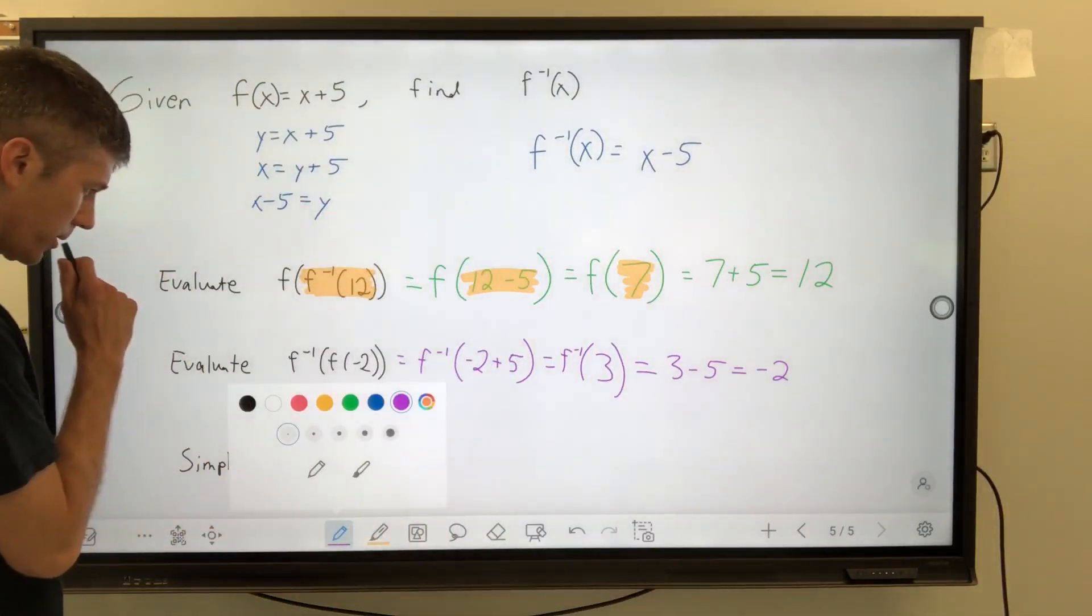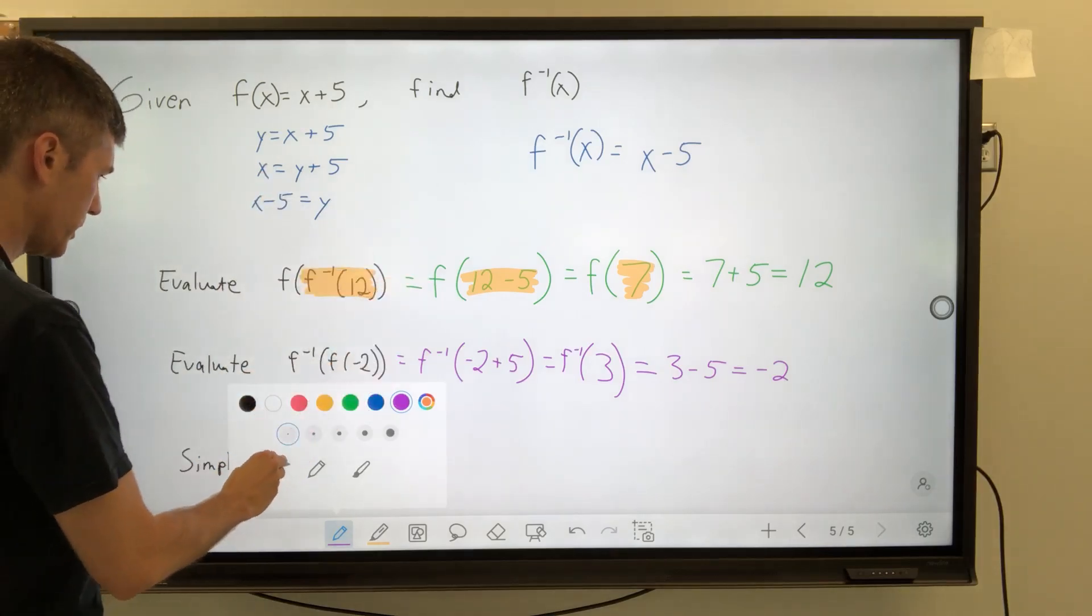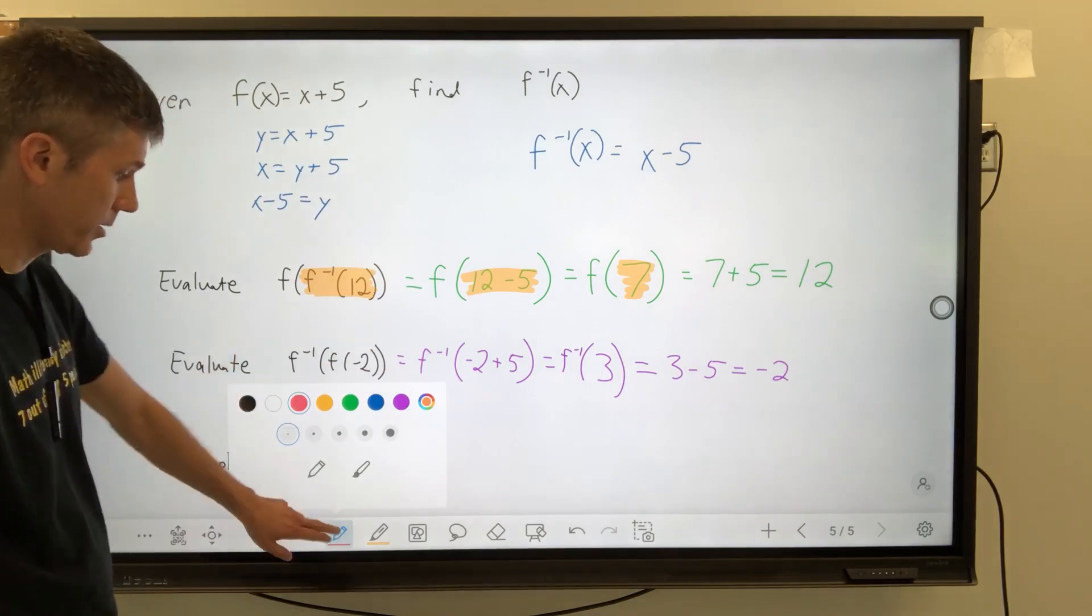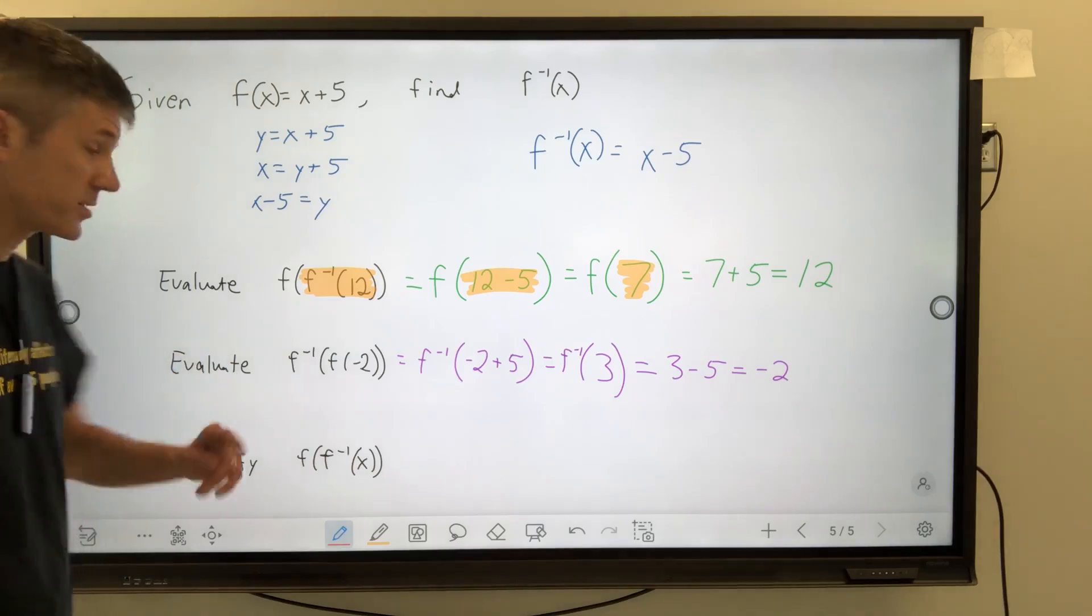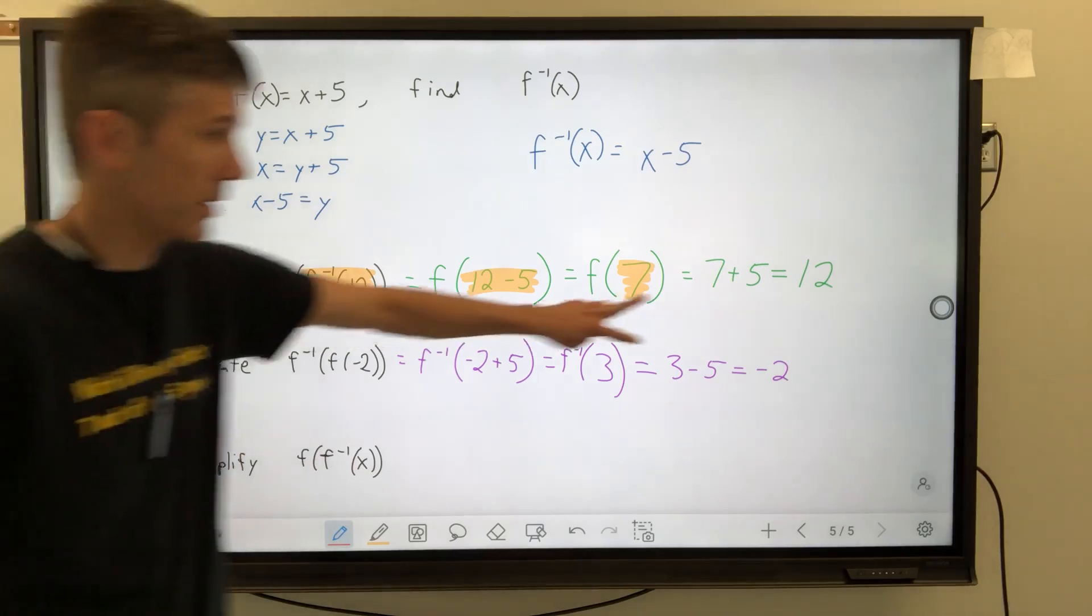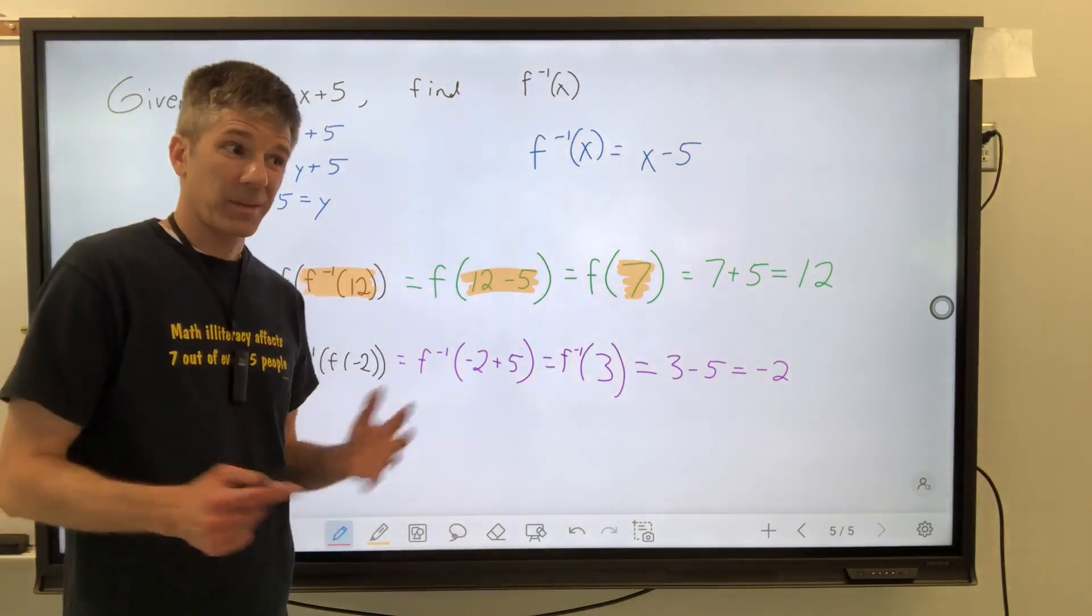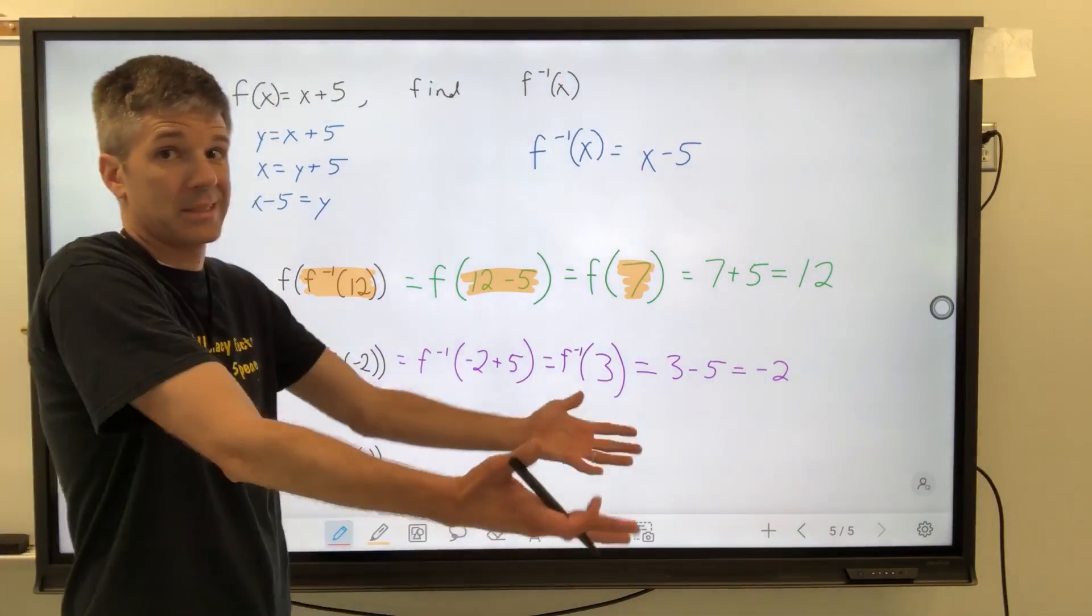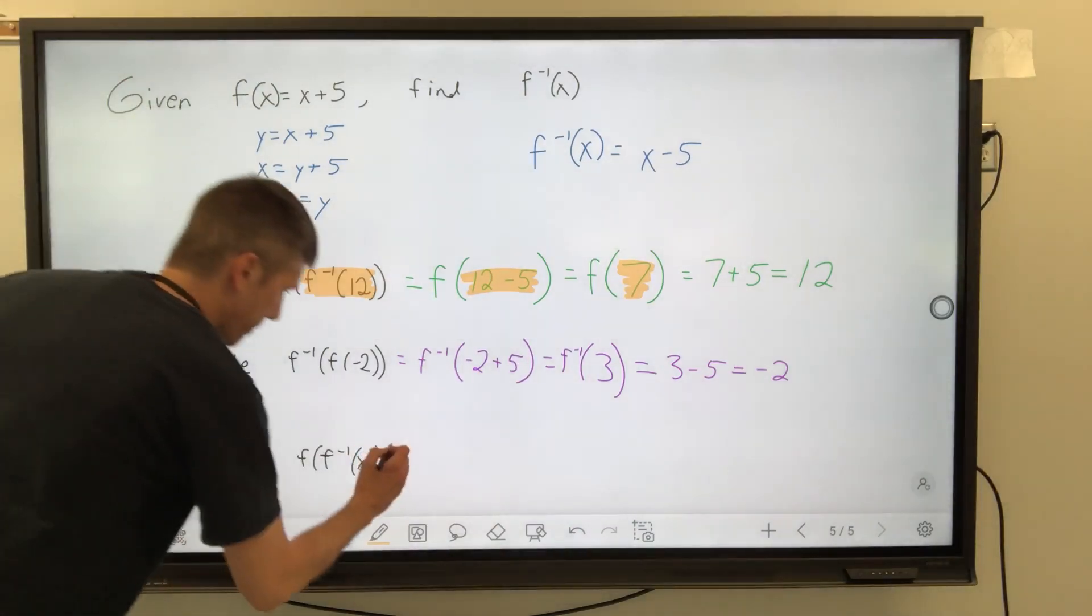Yay! We're done. No, we're not. You're not done. You have never plugged this 3 into this inverse f function. We just plugged in a negative 2 over here. But now we've got to take that output, which was 3. I'd love to highlight here, but I've been doing enough of that. We're going to take that 3. We're going to plug it in right there. So we're going to have 3 minus 5. And that is negative 2. Well, that looks familiar, doesn't it?